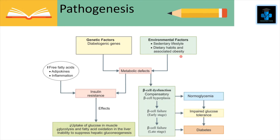Environmental factors also include associated obesity, particularly central or visceral obesity. Genetically, type 2 diabetes has a concordance rate of 35 to 60% in monozygotic twins compared with 17 to 30% in dizygotic twins. The lifetime risk in an offspring is more than double if both parents are affected. Diabetogenic genes have also been found and there is no evidence of an autoimmune basis. This leads to two important metabolic defects: insulin resistance and beta cell dysfunction.